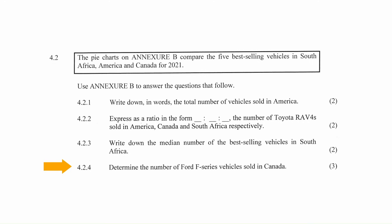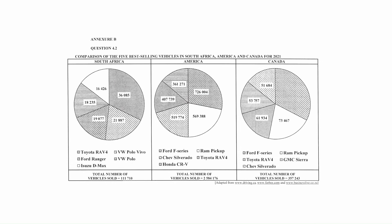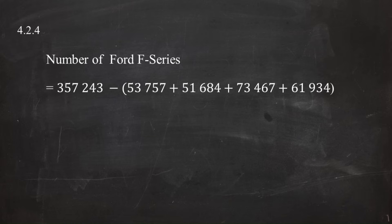In question 4.2.4, you are instructed to determine the number of Ford F-Series vehicles sold in Canada. The number of Ford F-Series vehicles sold in Canada is the difference between the total vehicles sold in Canada of 357,243 and the sum of the other vehicles given in the pie chart, which equals 116,401.